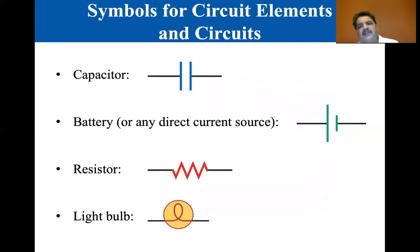Now, here are the symbols that we use for a capacitor. A capacitor is a parallel plate capacitor, so we use two little parallel lines to represent the parallel plates. A battery is a little bit different in that it's two plates, but one of them is shorter than the other. That's a battery.